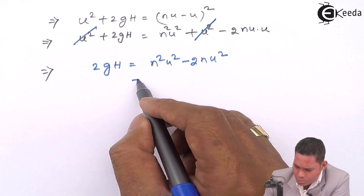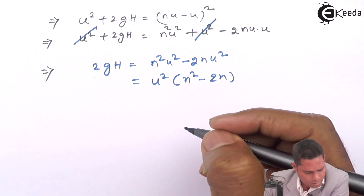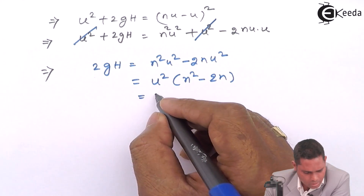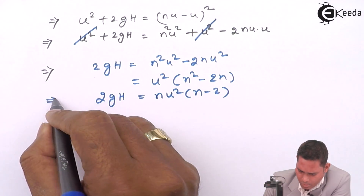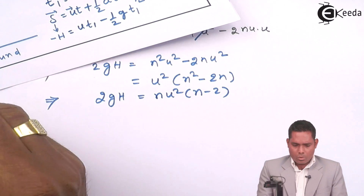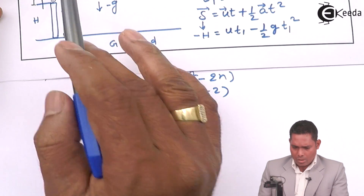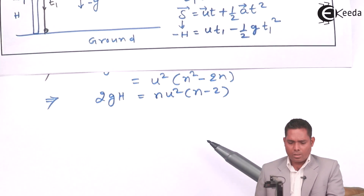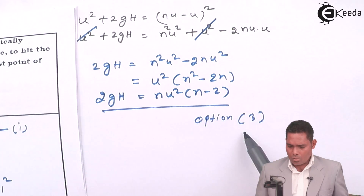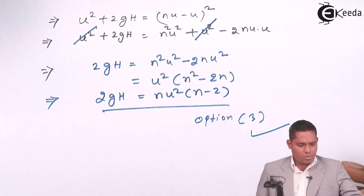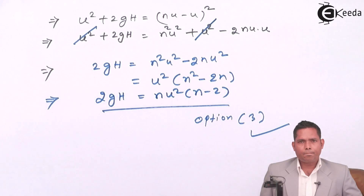Taking u² common from the right side: 2gh = u²(n² − 2n) = u² · n(n − 2). Looking at the options, 2gh = nu²(n − 2) matches option number 3. Therefore option number 3 is the correct answer to this question.